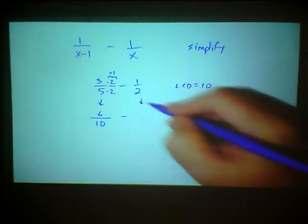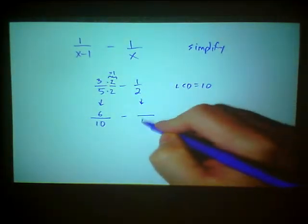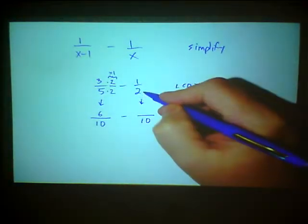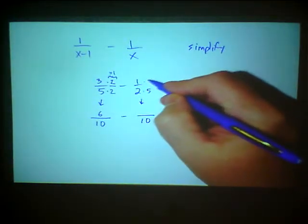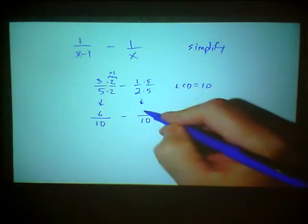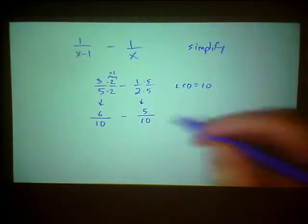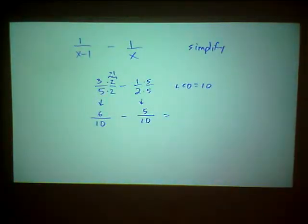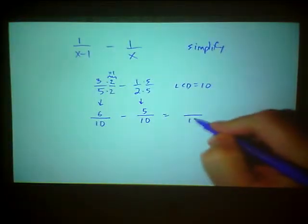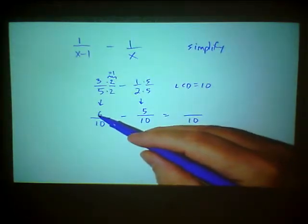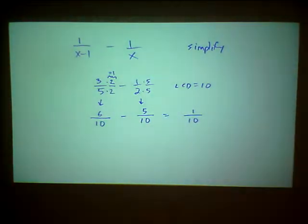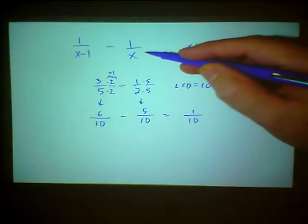I do the same thing for the second fraction. I need to go from 2 to 10, so I multiply top and bottom by 5, and one-half becomes five-tenths. Now I can subtract these two fractions because I have the same denominator — write the common denominator and subtract the numerators. Six minus five is one, so three-fifths minus one-half is one-tenth. And we're going to do the same exact kind of thing for these rational expressions.